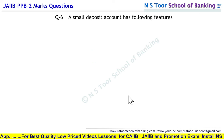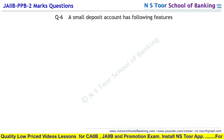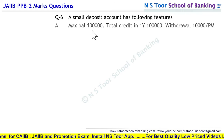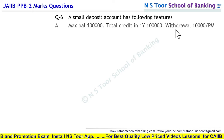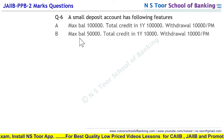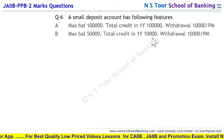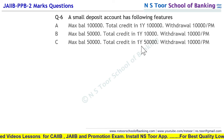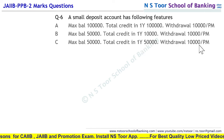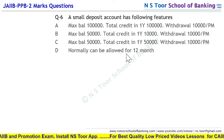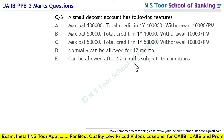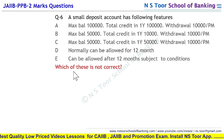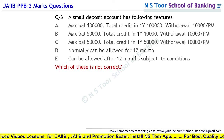Agle question par chalte hain. A small deposit account has the following features: Option 1 — maximum balance 1 lakh, total credit in one year 1 lakh, withdrawal 10,000 per month. Option 2 — maximum balance 50,000, total credit in one year 10,000, withdrawal 10,000 per month. Option 3 — maximum balance 50,000, total credit in one year 50,000, withdrawal 10,000 per month. Options also mention: normally can be allowed for 12 months; can be allowed after 12 months subject to conditions. Humne batana hai in mein se kaunsi galat hain.